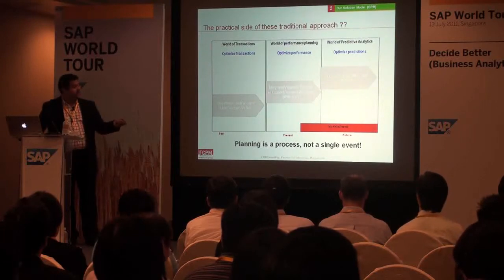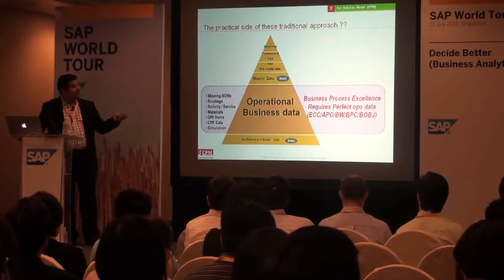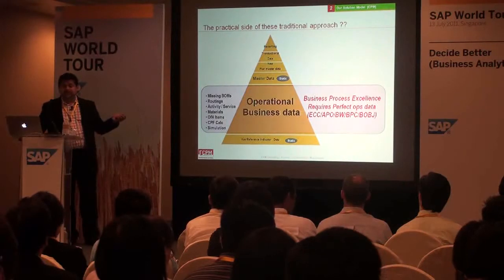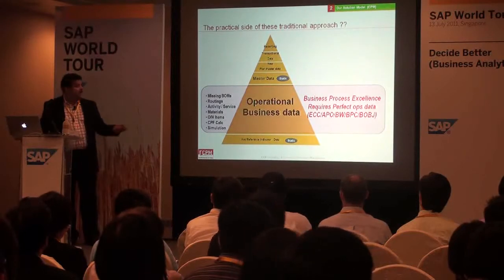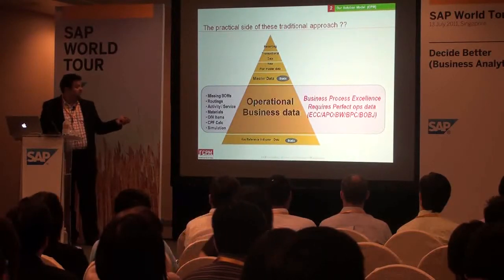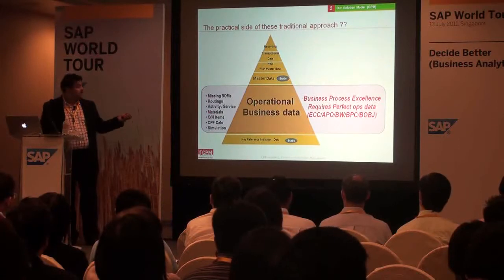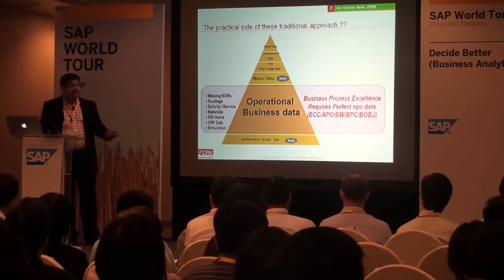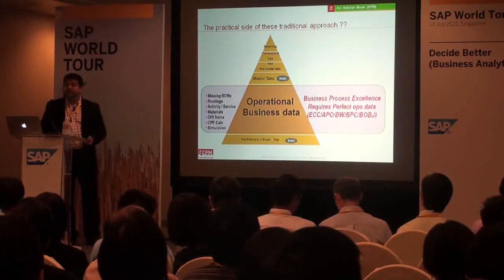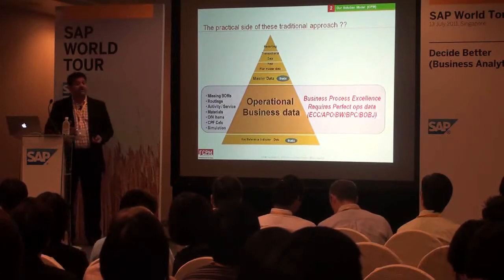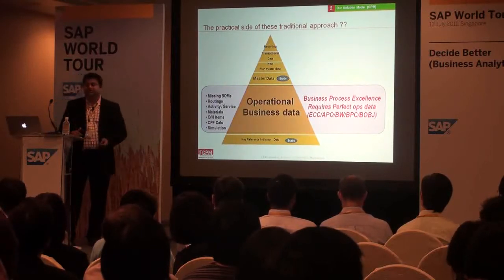On the practical side, there are a number of items which are static within our budget system — not online, and lacking capability to connect to transaction systems and operational business data. For example, BOMs are missing, activities are not there. If you're doing a driver-based budget process, many activities need to be keyed in manually. Materials are not present. Overhead items — an example is CPF calculation in Singapore — when CPF changes, you go back to Excel to handle that activity.